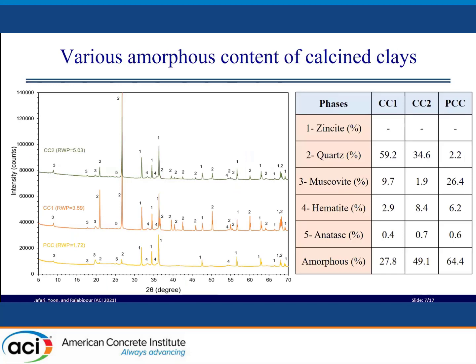The QXRD showed that CC1 contains the highest quartz content at around 60%, while CC2 has only 35% quartz. The amorphous content in CC1 is around 28%, and the amorphous content in CC2 is 49%. As it's clear, the amorphous content of CC1 is very low. The purification technique can reduce the quartz content from almost 60% down to 2.2%, and as such, the amorphous content significantly increased to 64.4%, which is advantageous.